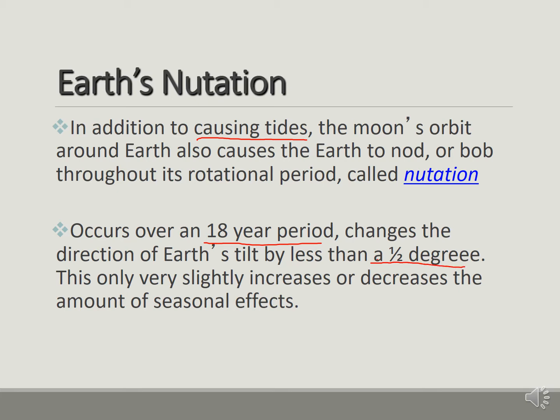This is sometimes why we may have more of a hotter summer or colder winter or a warmer winter versus a colder summer, because it will slightly increase or decrease the amount of the seasonal effects. This is called nutation.